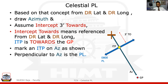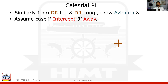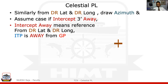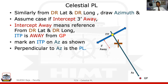This Celestial PL can be used further for a fix. But first, let us look at one more example where the intercept is not towards but away. Using the same azimuth and celestial body, this time the intercept is 3 miles away. You stand on the DR and look away from the GP — since the GP was at 150, you go the opposite side — mark the ITP there and draw the right-angle line perpendicular to the azimuth as your PL. So we can have two kinds of intercept: towards and away.